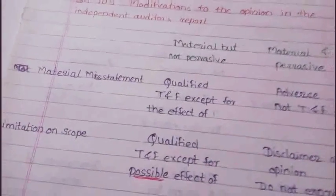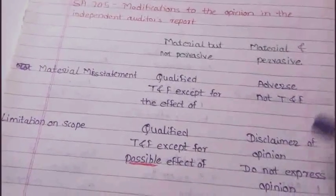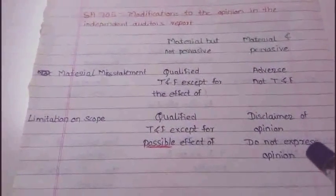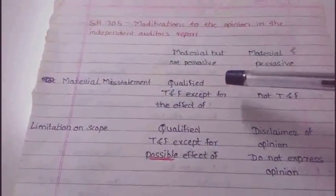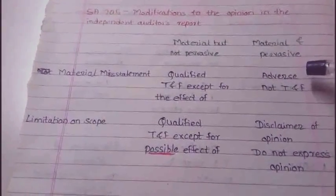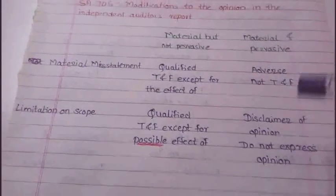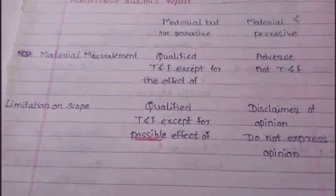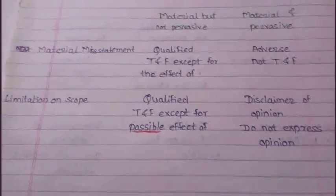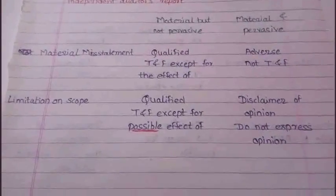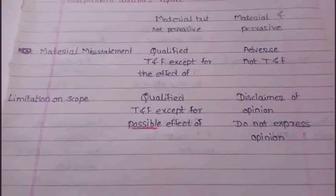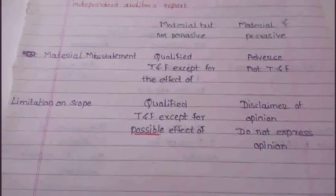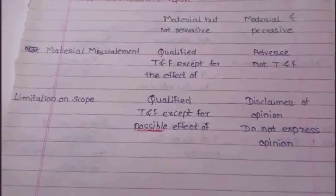For disclaimer of opinion, we write that we do not express an opinion — the auditor is unable to express any opinion. Also, in the normal audit report we write 'we have conducted the audit of ABC,' but for a disclaimer of opinion we cannot say we conducted the audit, because we were unable to conduct it. So instead we write 'we were engaged to audit' but we could not conduct it and therefore do not express any opinion, due to the reasons mentioned in the basis for opinion paragraph.